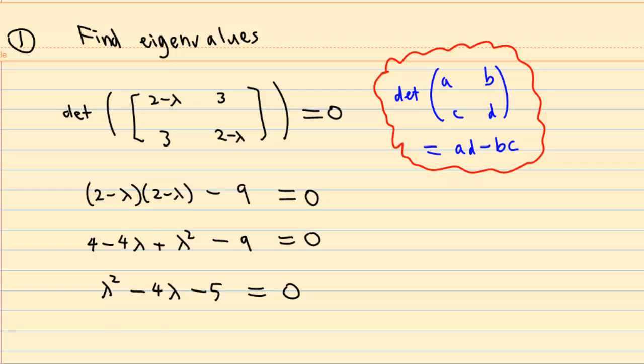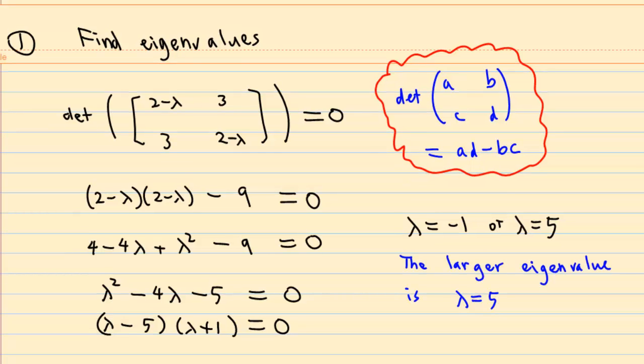Factorize it, we get lambda minus 5, lambda plus 1, multiply, give you 0. So lambda equal to 5 or minus 1. And the larger eigenvalue is lambda equal to 5.